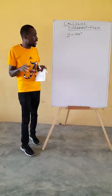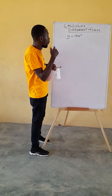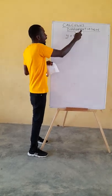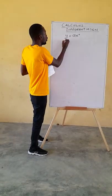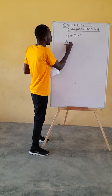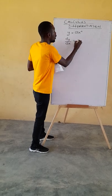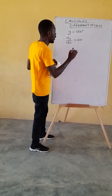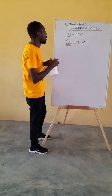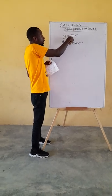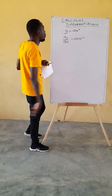A simple differentiation rule says: let the power multiply the coefficient of the independent variable, and reduce the power by 1. That is the simple differentiation rule. So to differentiate this, dy by dx is equal to a times n, x exponent n minus 1. We let n multiply a, then we subtract 1 from the power, or reduce the power by 1.